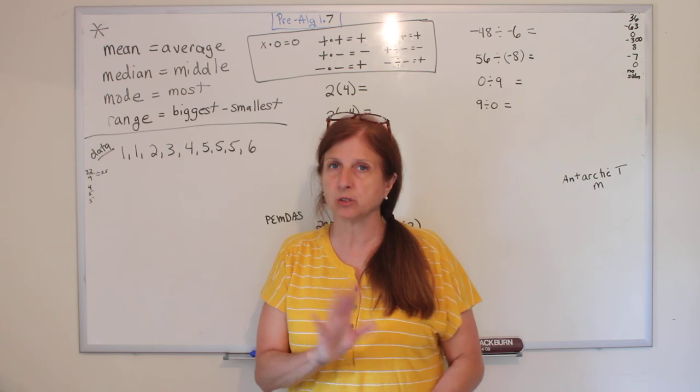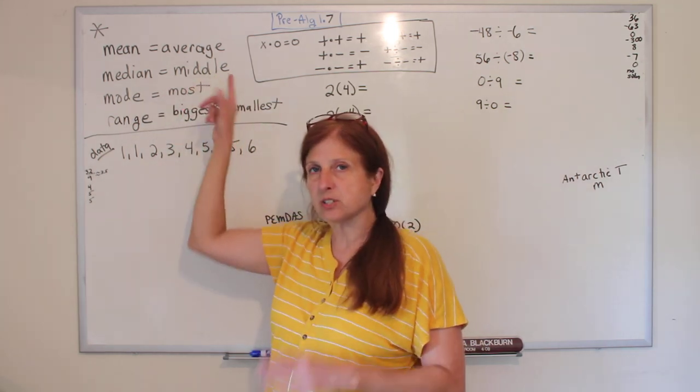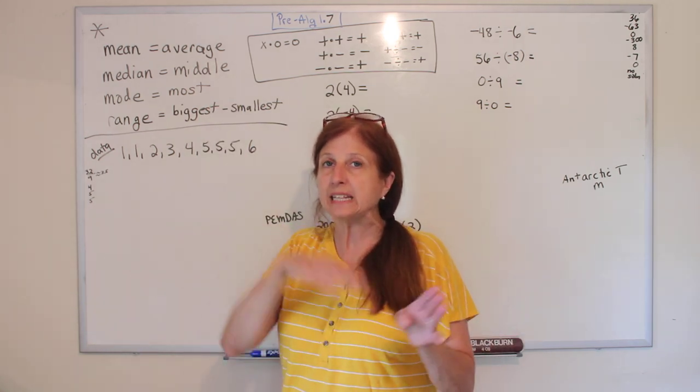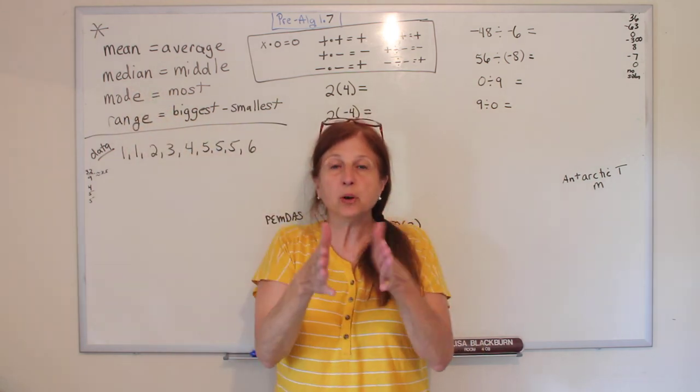The next one is the median. If you put the numbers in order from least to greatest, the one in the middle is the median. If there's two in the middle, you average them and that's the median, halfway between them.